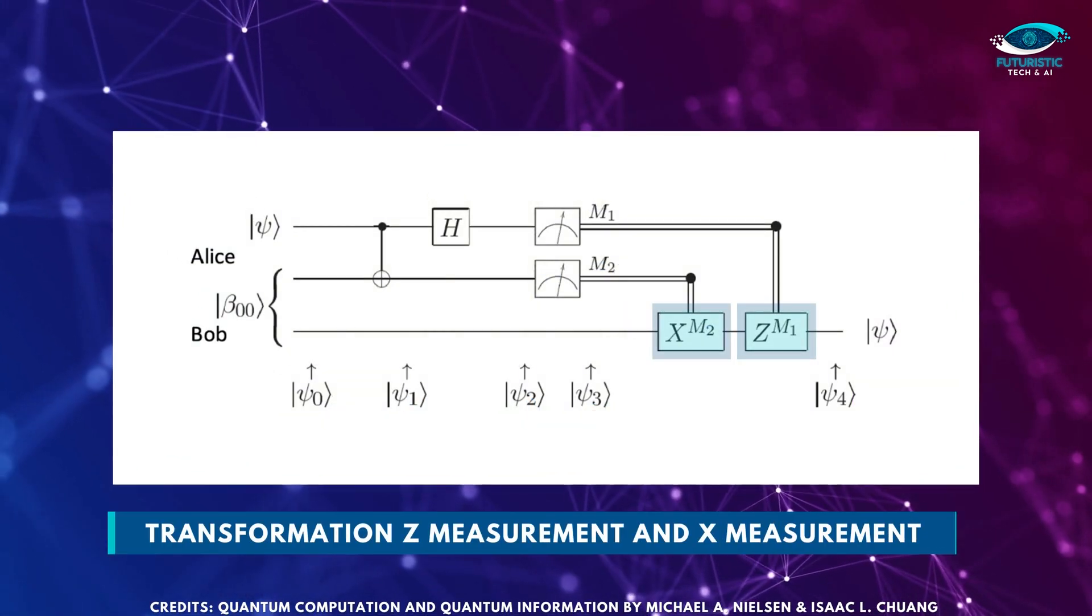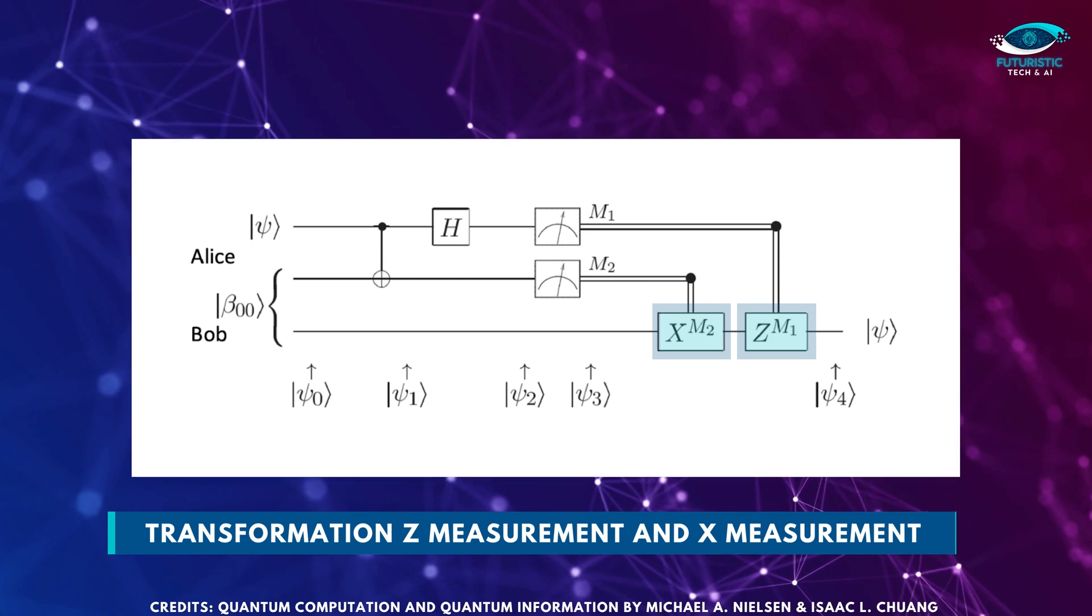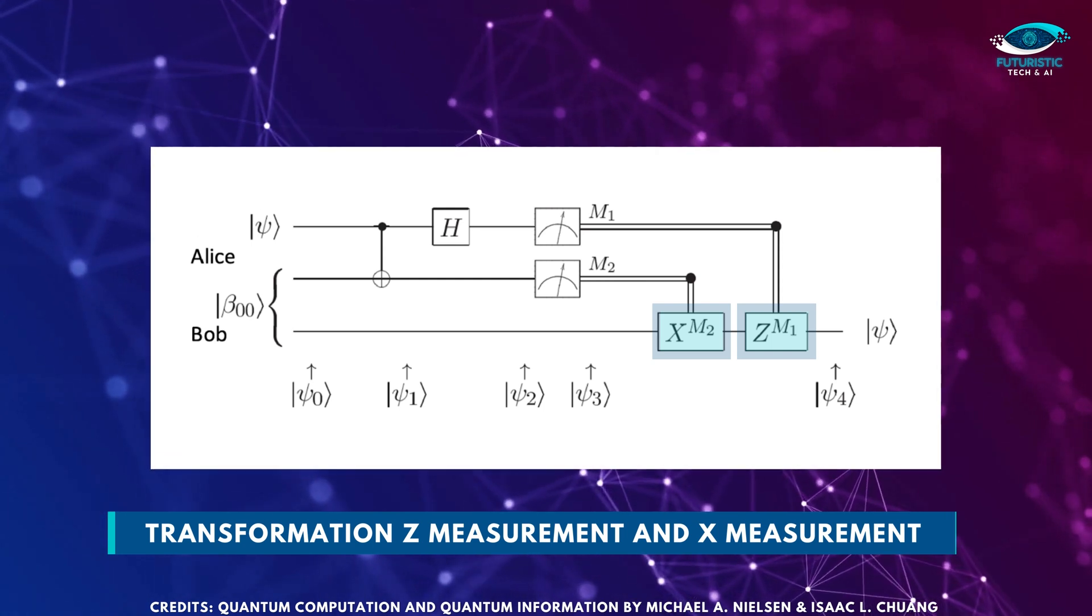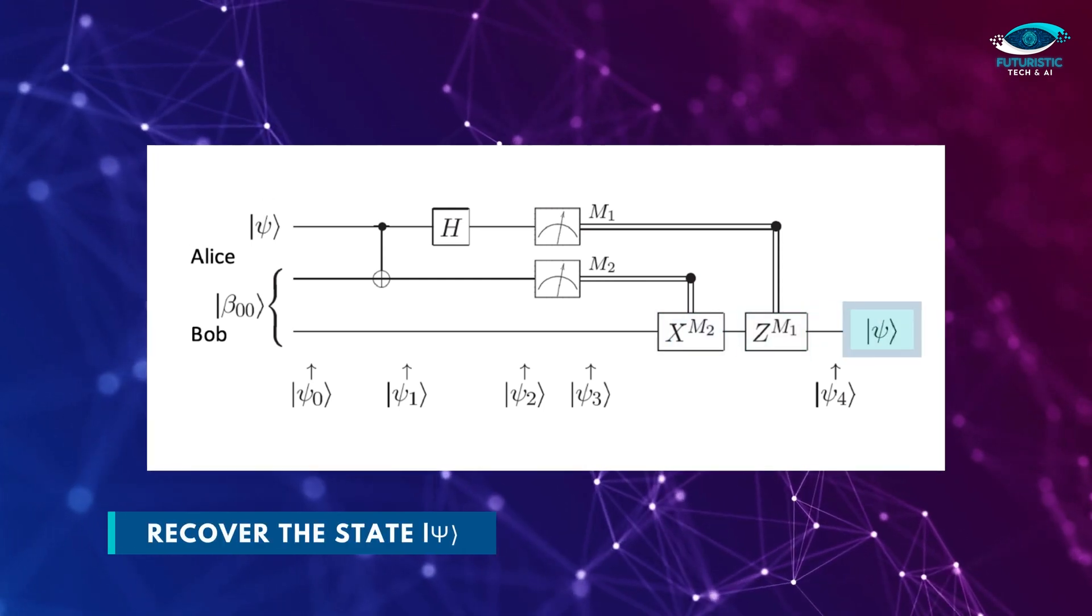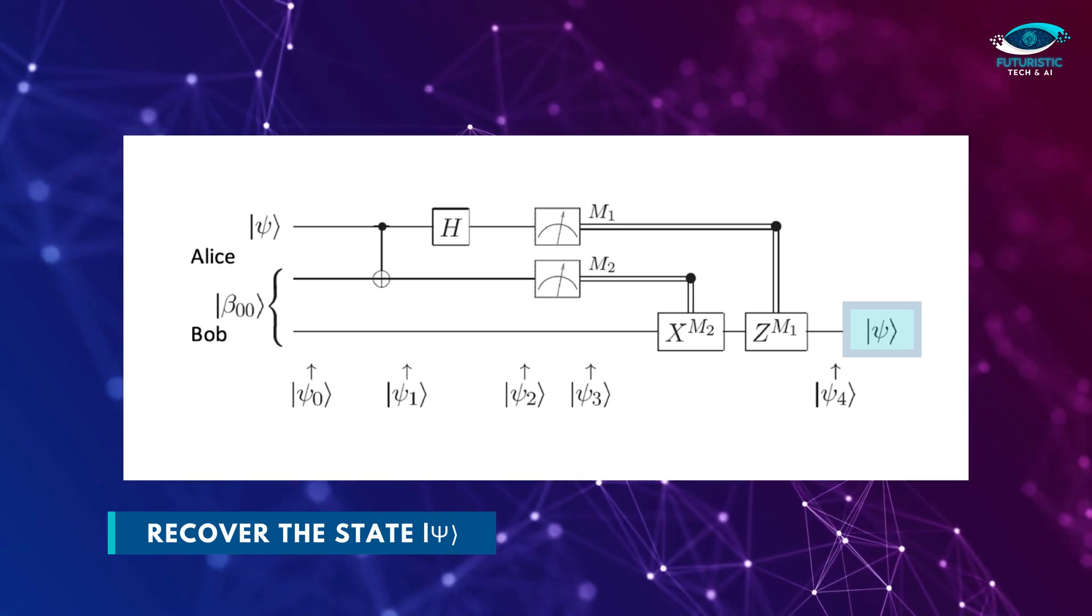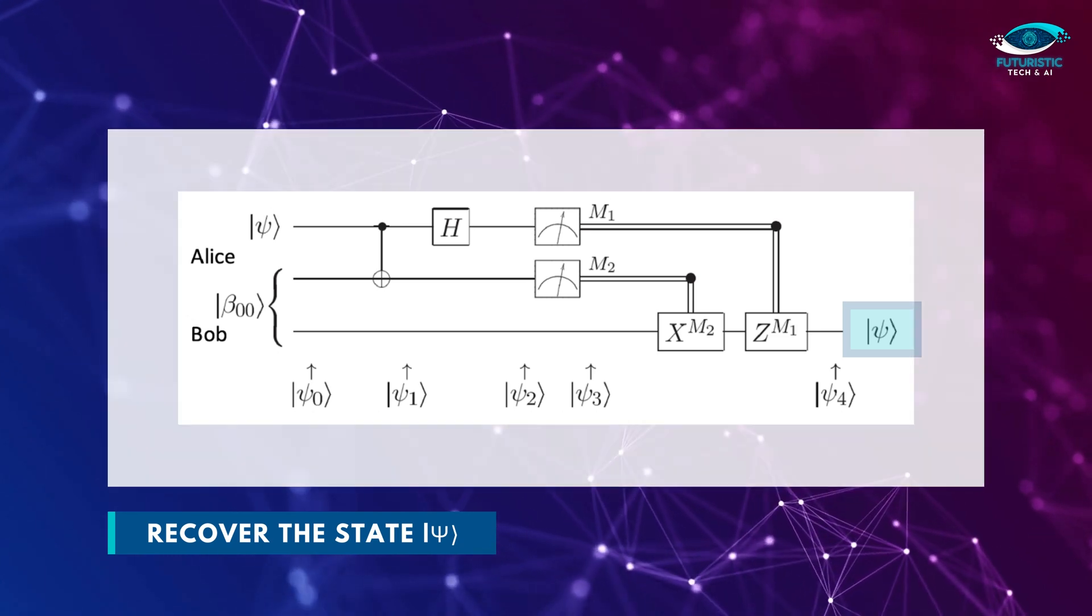Summing up, Bob needs to apply the transformation Z measurement and X measurement. Note how time goes from left to right in circuit diagrams, but in matrix products, terms on the right happen first, to his qubit, and then he will recover the state psi.